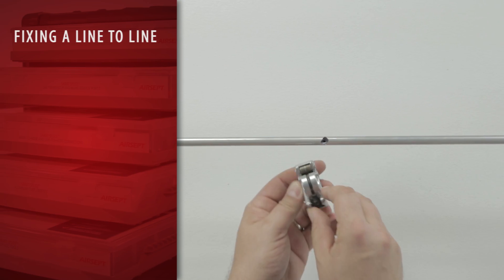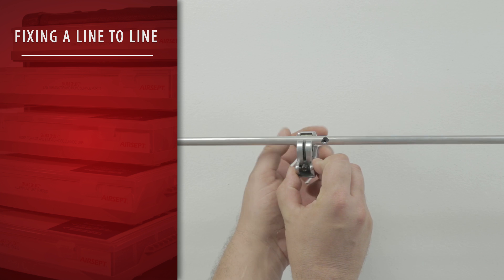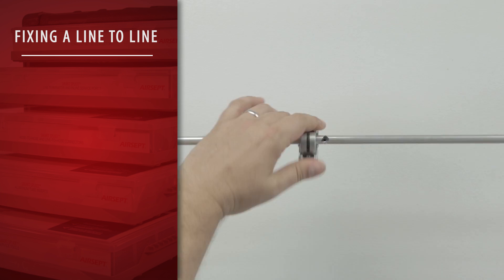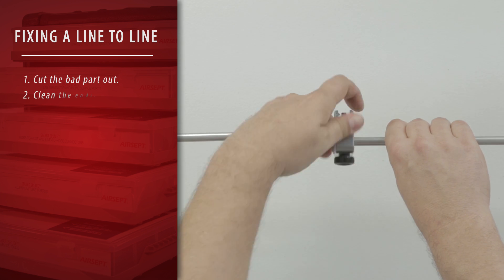Fixing a line-to-line. With no R&R, fixing a line takes just a few steps. Simply cut the bad part out and clean the ends.